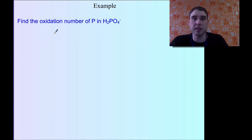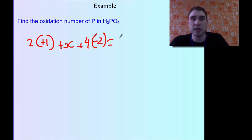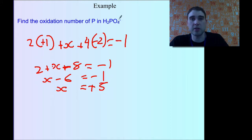Let's look at another example: find the oxidation number of P in this molecule — and notice there's a charge now. So: 2 times plus 1 (oxidation number of hydrogen), plus X for phosphorus, plus 4 times minus 2 for the oxygens. This time, rather than equaling 0, it equals minus 1. So: 2 plus X minus 8 equals minus 1. So X minus 6 equals minus 1, meaning X equals plus 5. The oxidation number of phosphorus is plus 5.